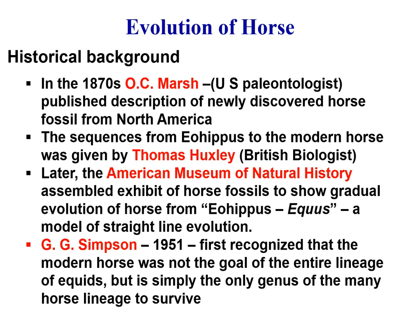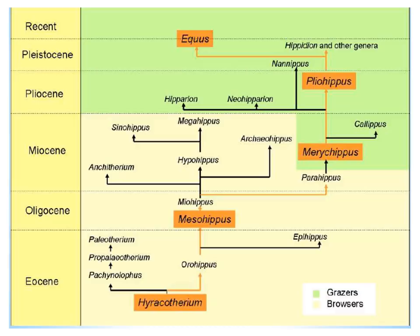J.G. Simpson, in 1951, first recognized that the modern horse was not the goal of a single linear lineage from Eohippus, but is simply the only genus of many horse lineages to survive. During evolution, there were also different other genera, but they could not survive the environmental conditions. So the modern horse was able to survive, and we can see a straight line of lineage.